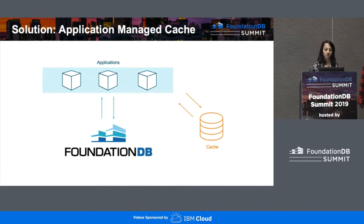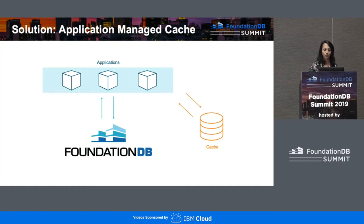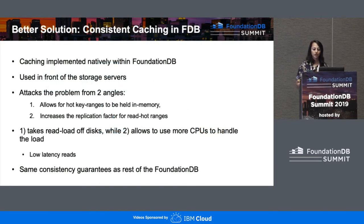I'm Neelam from Snowflake, and we're excited to talk about the caching here today. Before we talk about native consistent caching within FoundationDB, you might ask: why not use an application-managed cache like Memcached or Redis between the application and FoundationDB? While that is a possible solution, it's not really a good one, because the entire burden of managing that cache is on the application — consistency, coherency, availability, and complexity all become very questionable. So even though it's a viable solution, it's not really a good one. We propose a much better solution: implementing the caching functionality directly within FoundationDB.